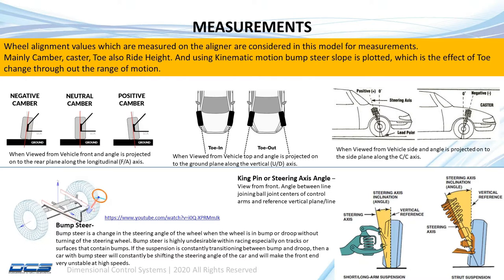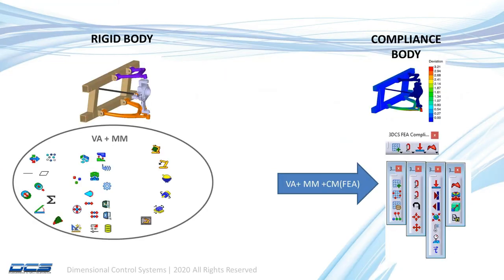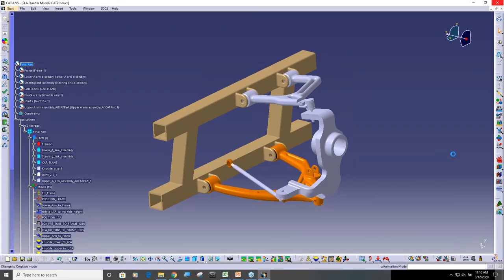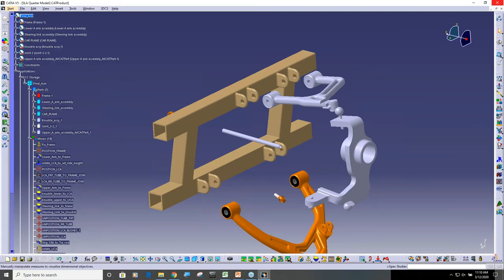For the rigid body we require the variation analysis module and the mechanical model module. For compliance body modeling, we additionally need the compliance modeler, which includes FEA compliant modeling. We need all three modules to build this model, so make sure users have all three modules — these are the prerequisites to run the model.